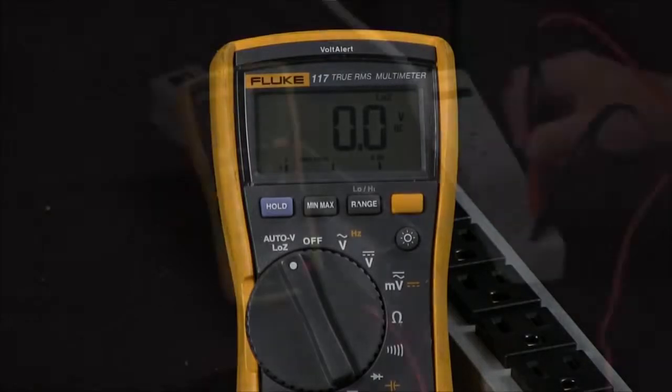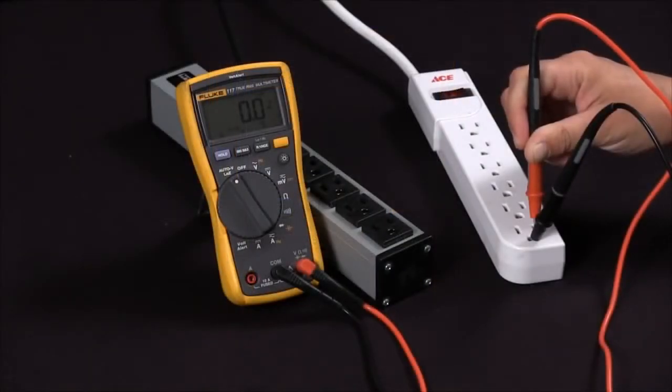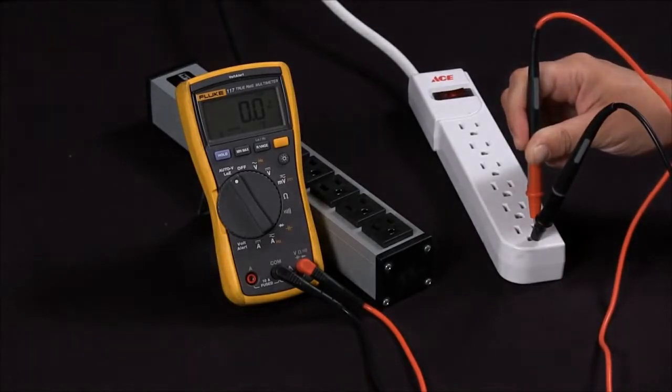So thus this is telling me that I am experiencing a ghost voltage from hot to ground and this is how to determine whether or not you're getting a true voltage or a ghost voltage with a Fluke 117.